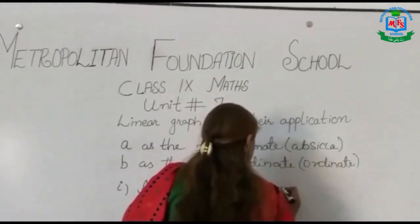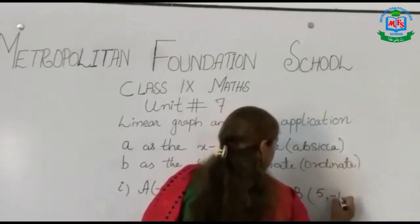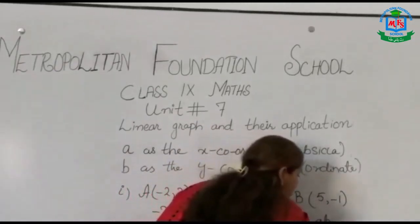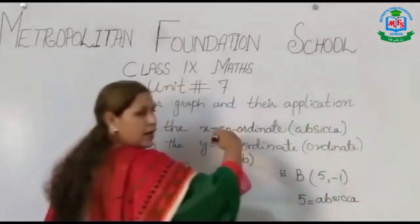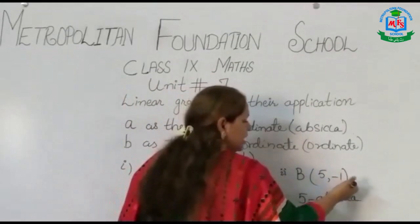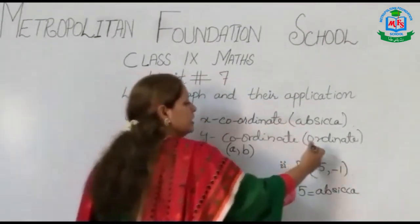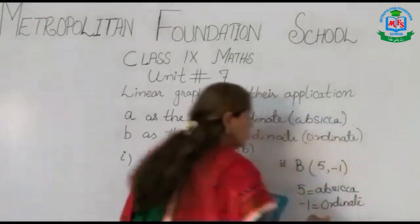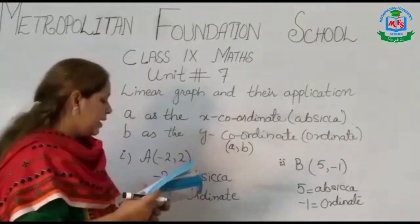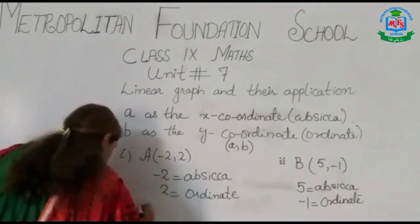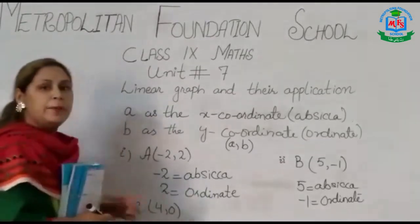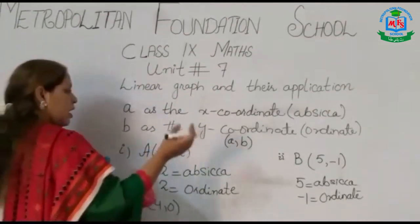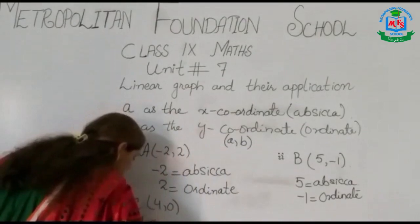For question number 2, the point has value a as one-half and b as minus 1. So the abscissa is one-half and the ordinate is minus 1. For question number 3, we have the point (4, 0). Both values — x is positive and y is zero — so we identify the x and y coordinates accordingly.